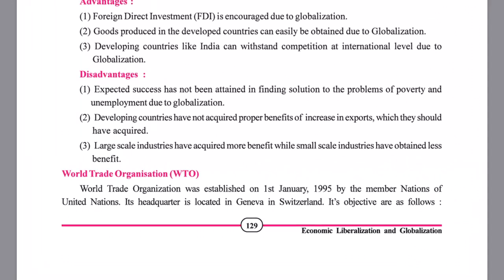The World Trade Organization was established on 1st January 1995 by the members of the UN. Almost 199 countries — the United Nations member countries — established one organization at the international level for the means of trading, and it was named the World Trade Organization. Its headquarters is in Geneva, Switzerland. Remember this — it can be asked in multiple choice questions or fill-in-the-blank questions in the exam.